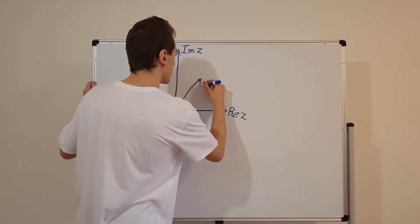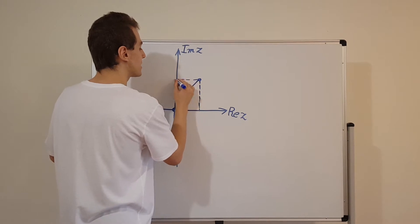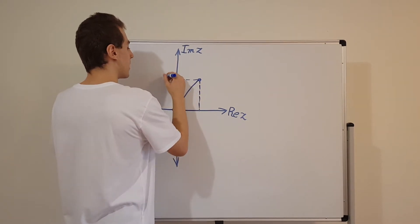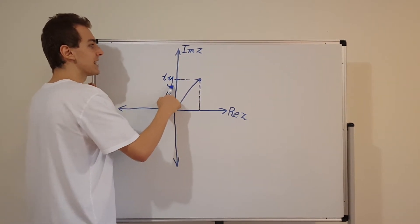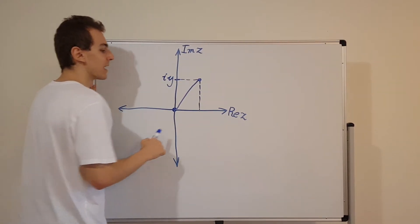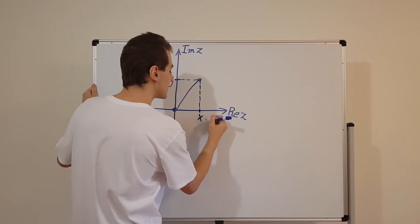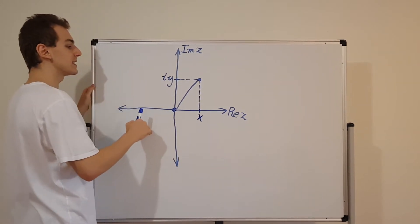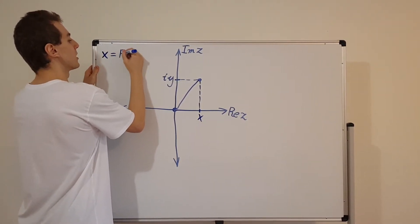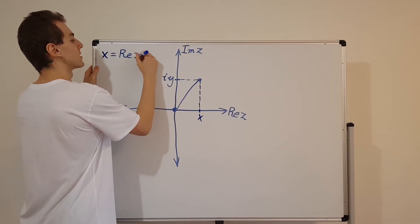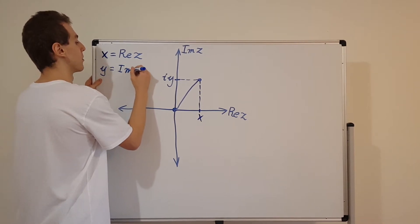I'm going to draw a line going down here, and I'm going to call this i times y. Y is the imaginary component of this complex number. And over here I'm going to call this x, and x is the real component. So x we're going to use to denote the real component of the complex number z, and y is going to be the imaginary component of z.